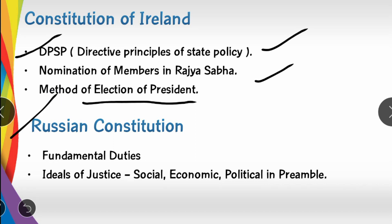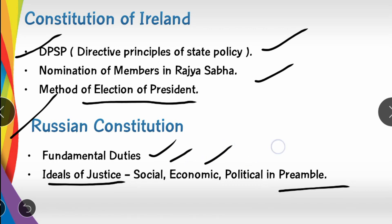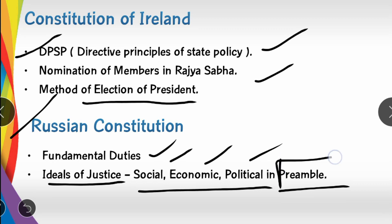Next is the Russian Constitution, from which we take the concept of fundamental duties. We also take the ideals of justice found in the Preamble — social justice, economic justice, and political justice — from the Russian Constitution. The Preamble is very important and these ideals are drawn from the Russian Constitution.